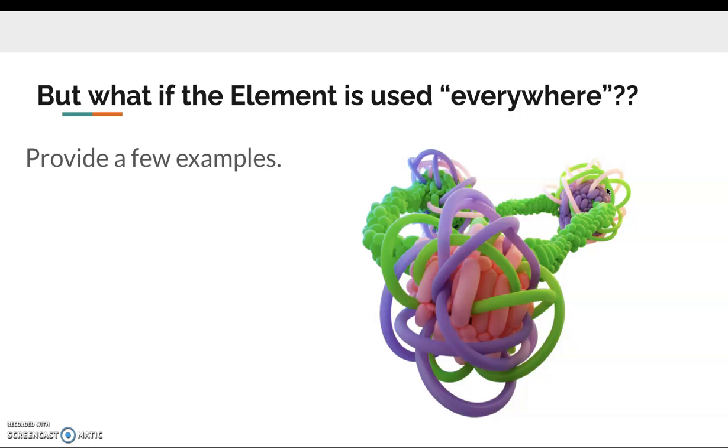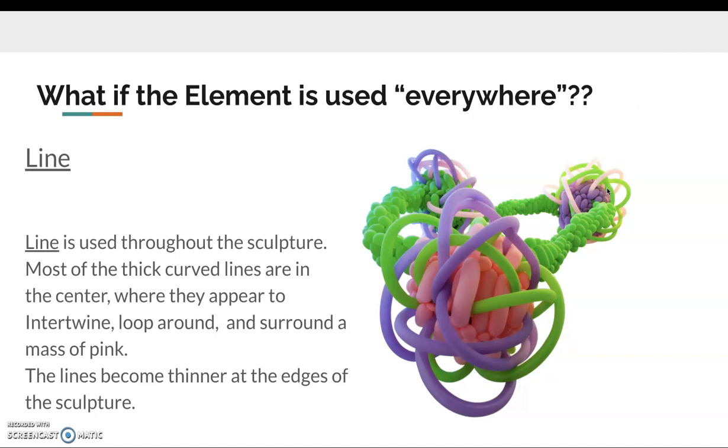Then you might be thinking, well, if I'm looking at an artwork like this one here on the screen, which is made of balloons, what if the elements are used everywhere? Then provide a few examples. For example, if I'm talking about the use of line in this sculpture, I would say line is used throughout the sculpture. Just pointing that out. Most of the thick curved lines are in the center where they appear to intertwine, loop around, and surround a mass of pink. The lines become thinner at the edges of the sculpture.